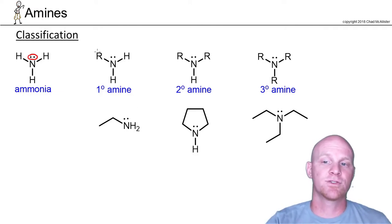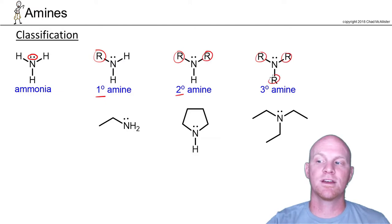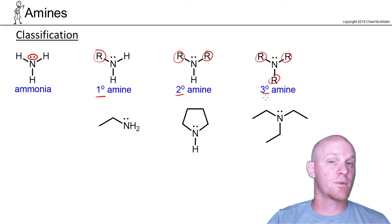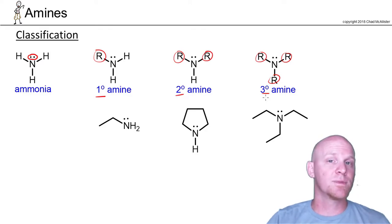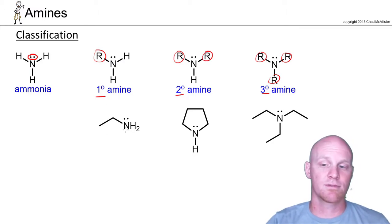We classify amines based on the number of carbon chains the nitrogen is directly bonded to. If the nitrogen is directly bonded to one carbon chain, that's a primary amine; two carbon chains, that's a secondary amine; three carbon chains, that's a tertiary amine. Nitrogens can also make four bonds with a positive formal charge, giving a quaternary ammonium ion, but we'll restrict ourselves to normal amines for now.